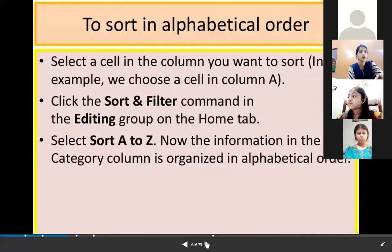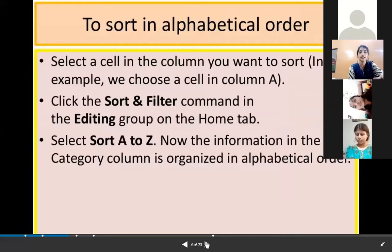To sort in alphabetical order, select a cell in the column you want to sort. In this example, we choose a cell in column A. Click the Sort & Filter command in the Editing group of the Home tab. Select Sort A to Z. Now the information in the category column is organized in alphabetical order.